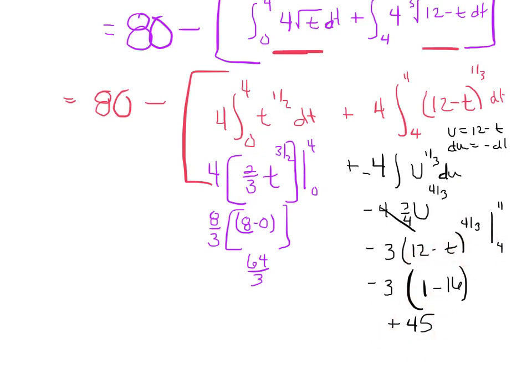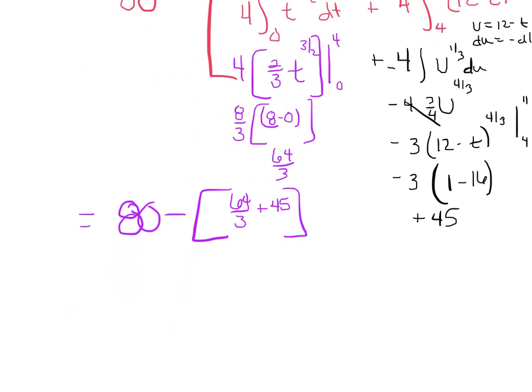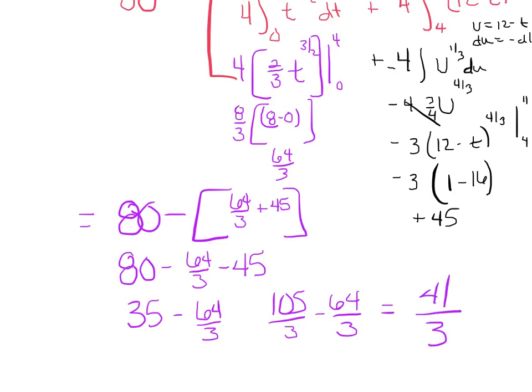I just want to make sure we're cleaning up here. I should have 80 minus 64 thirds plus 45, which I'm going to clean up as 80 minus 64 thirds minus 45 if I distribute that negative. I've got 35 minus 64 thirds, which is 105 thirds minus 64 thirds for a total of 41 thirds. Quite a bit of work on these piecewise functions.